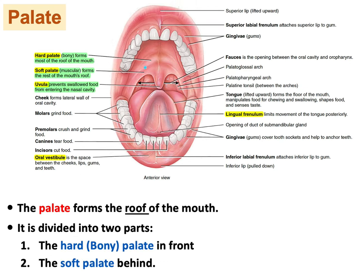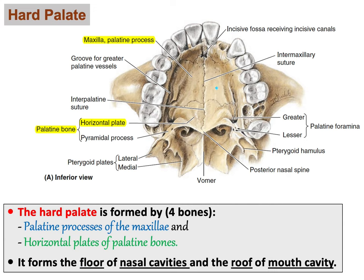The palate is divided into the hard bony part anteriorly and the soft muscular part posteriorly, with the uvula as part of the soft palate. The hard palate is bordered by the teeth and composed of four parts divided by sutures — mainly formed anteriorly by the maxilla and posteriorly by the palatine bone.